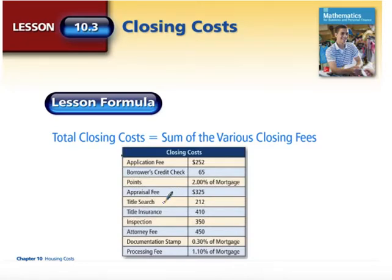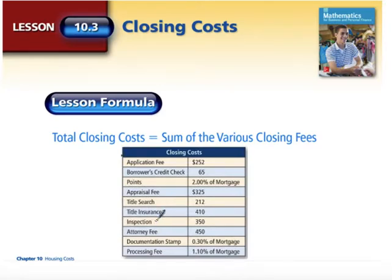You will have a title search of the home or the property to make sure it's free and clear of any back taxes paid on that property. With that, you might have title insurance included as well. There's also an inspection fee — someone will come out and inspect the home to make sure the value matches the mortgage and that the value of the home is not less than what you're mortgaging.